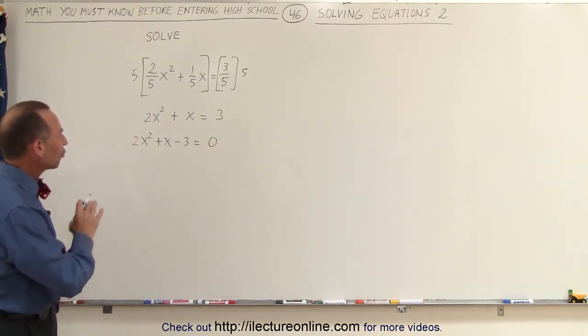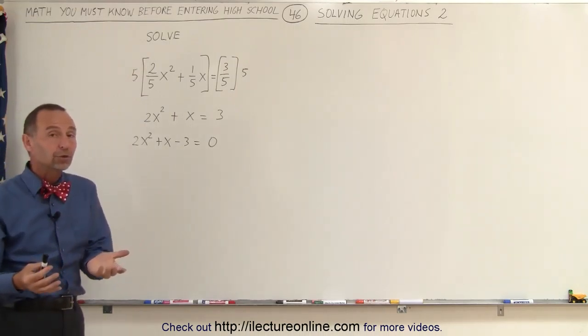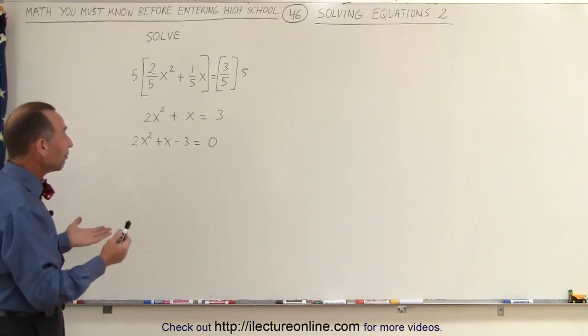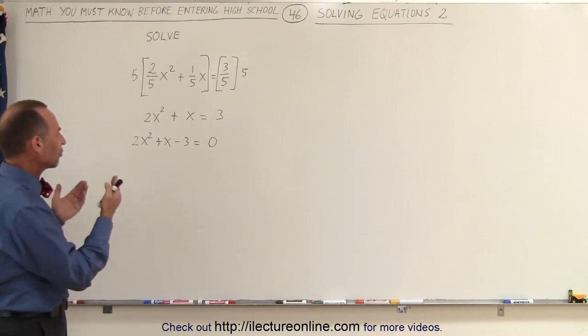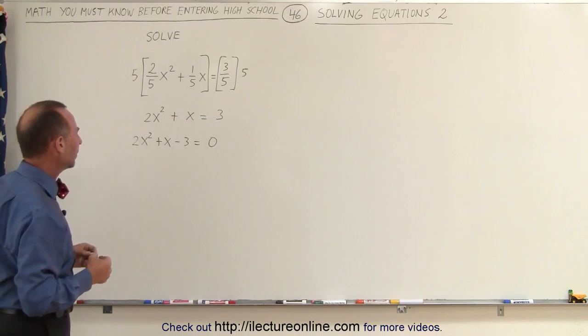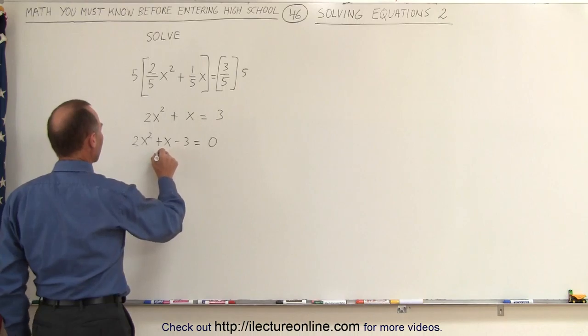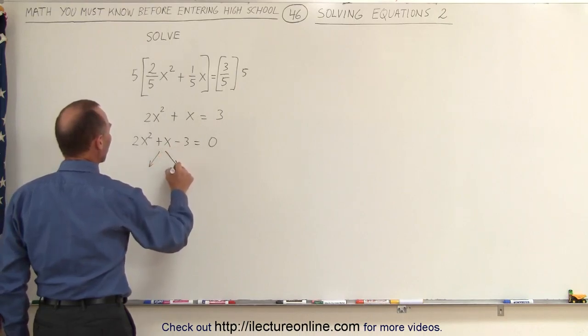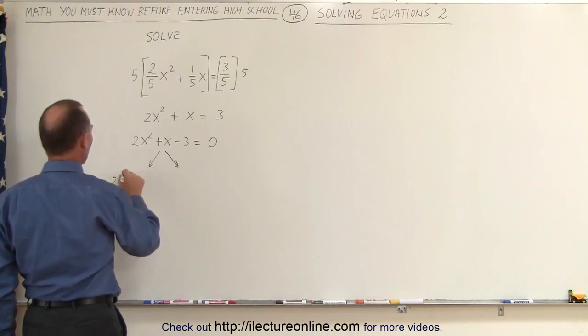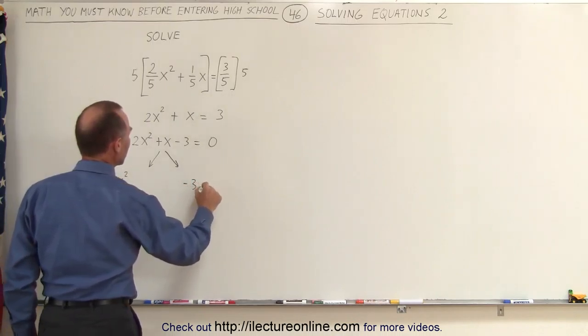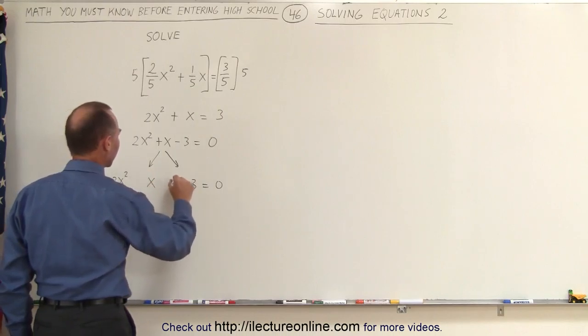Now, the next thing is that we need to solve this, and we can do it in various ways. If it's factorable, we'll try to factor it. If it's not factorable, we can use a quadratic formula. So let's see if we can actually factor this. And to do that, we're going to rewrite this as, let's see, we're going to take the middle term and write it as the sum of two middle terms.